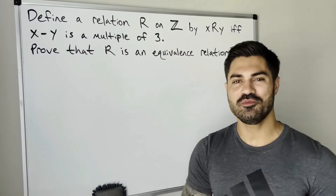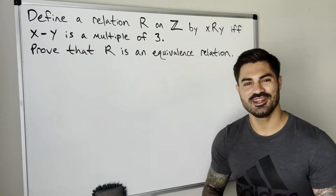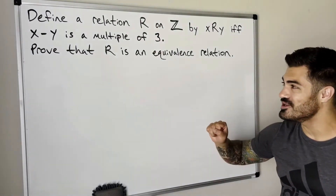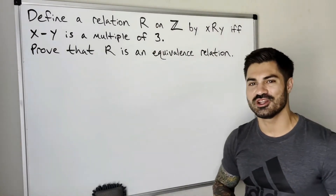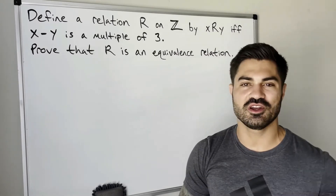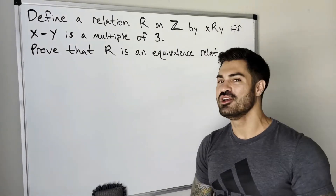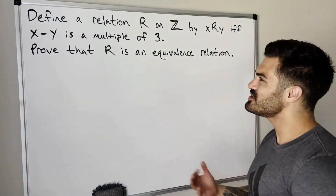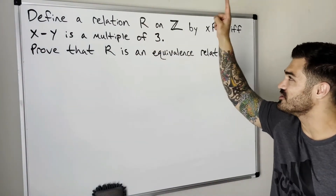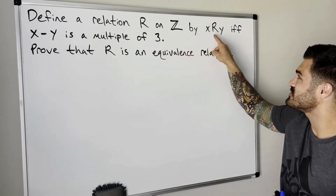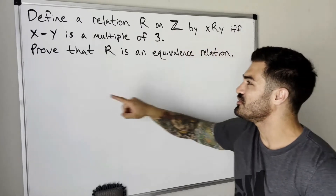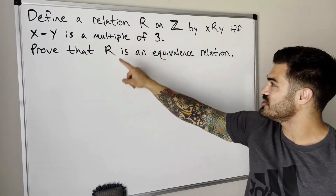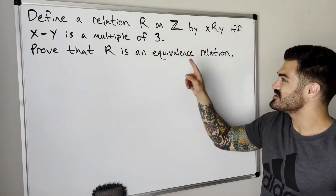Welcome to another video. In this video we're going to do another example of proving that a relation is in fact an equivalence relation. If you're brand new to equivalence relations, I'll link a video above as a good introduction. We're defining a relation on the set of integers by: x is related to y if and only if x minus y is a multiple of three. We want to prove that this relation is an equivalence relation.